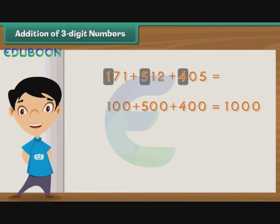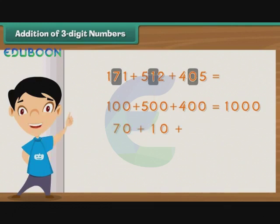Now we proceed to add the digits at the tens place, that is 7, 1, and 0. We add 70, 10, and 00 to get 80.